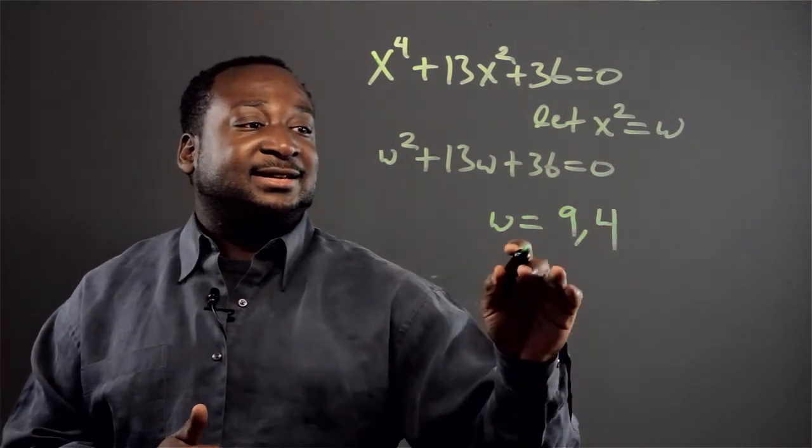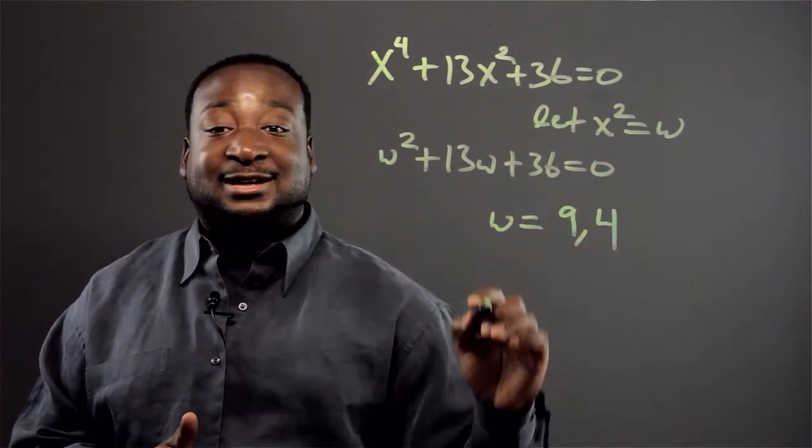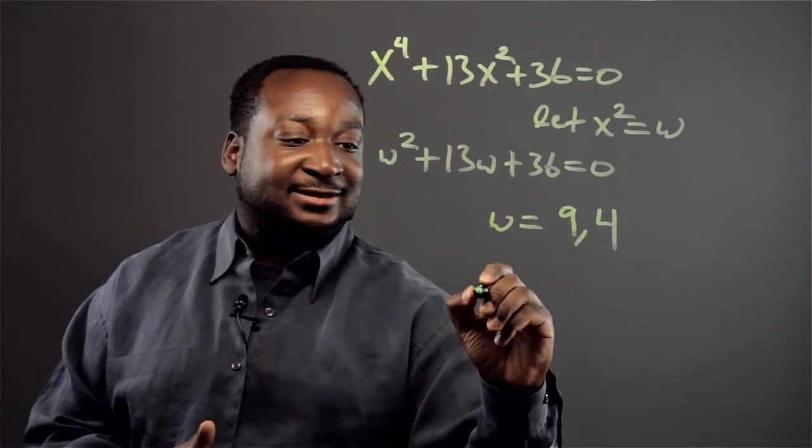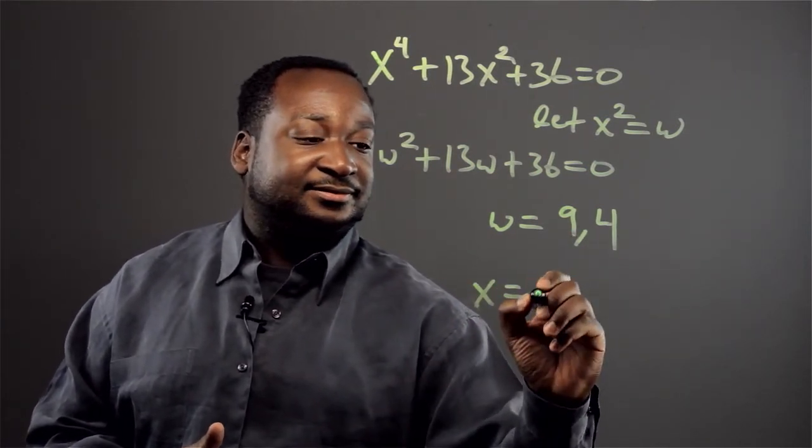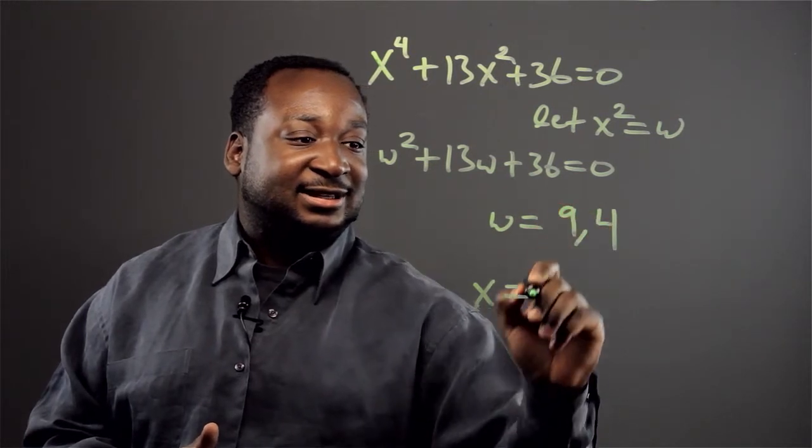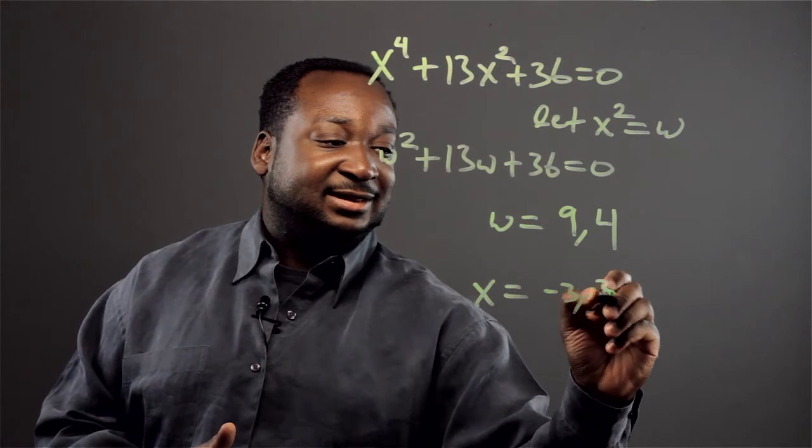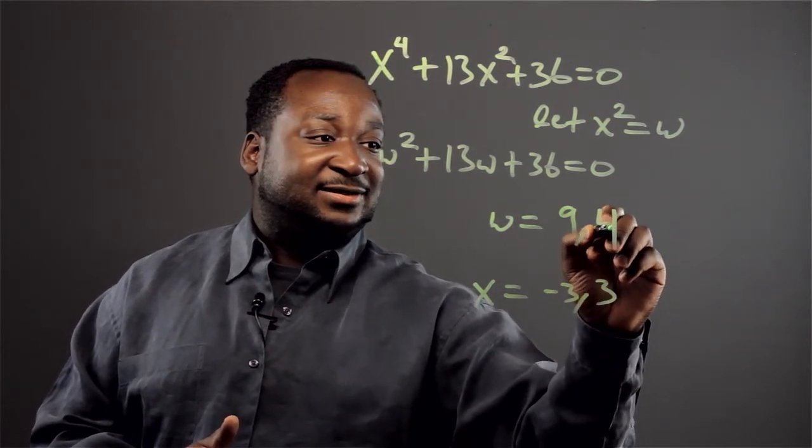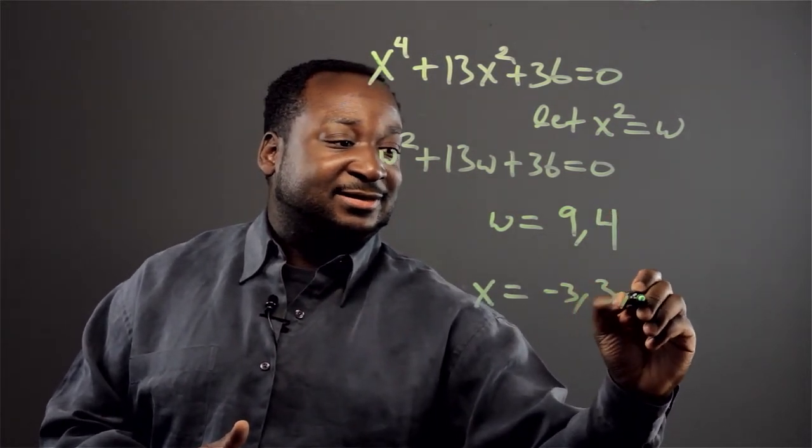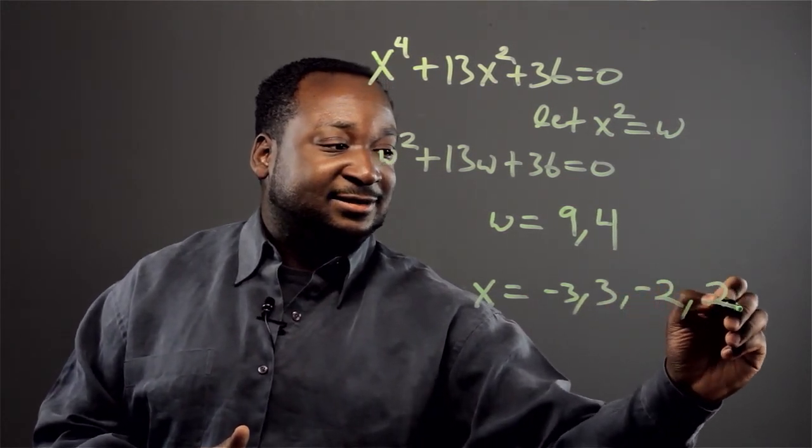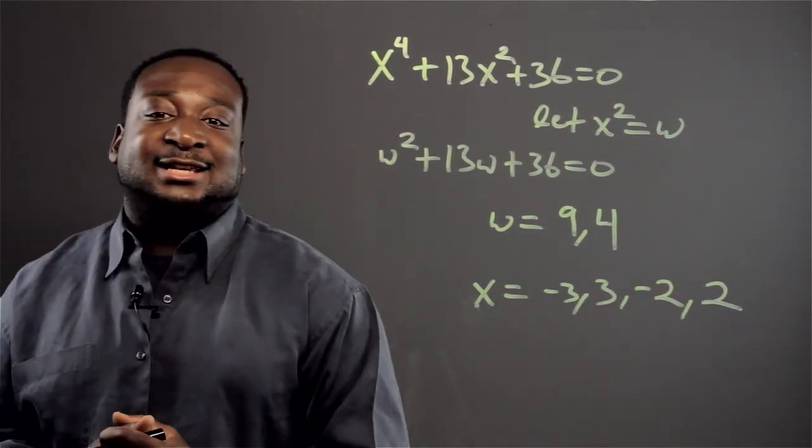And since x squared equals w, we know that x is going to equal the square root of this, which is negative 3 and 3, and the square root of 4, which is negative 2 and 2. And that's how you solve a quartic.